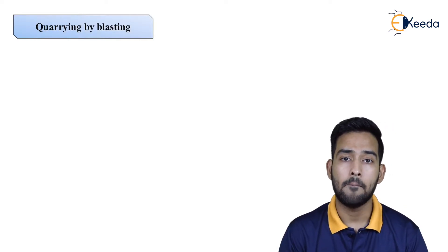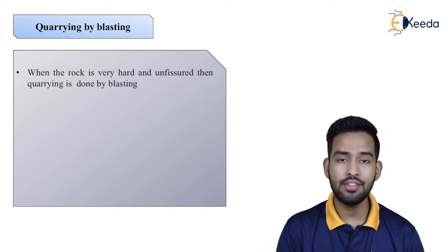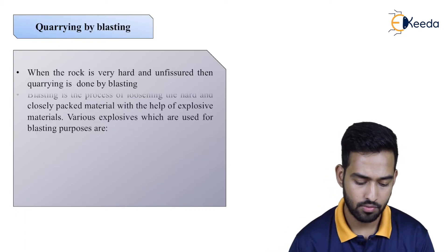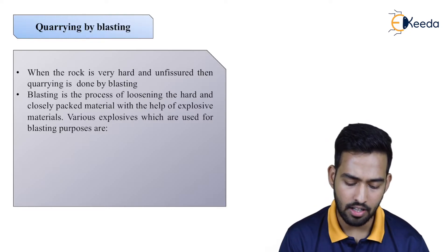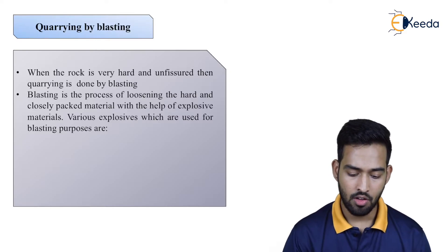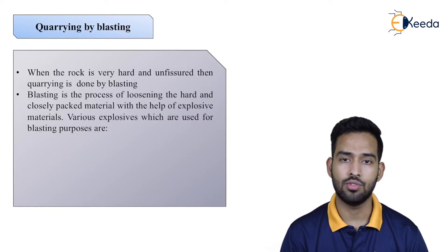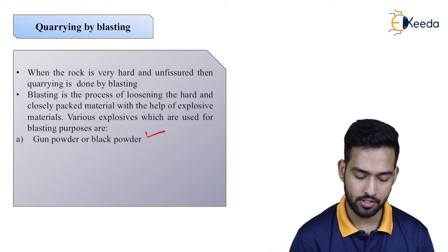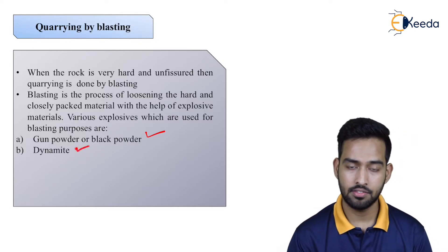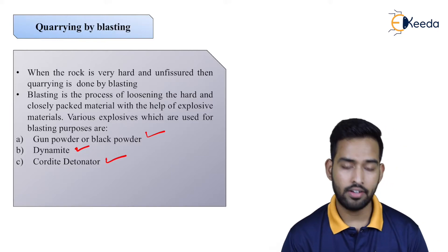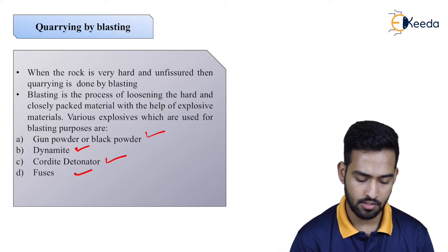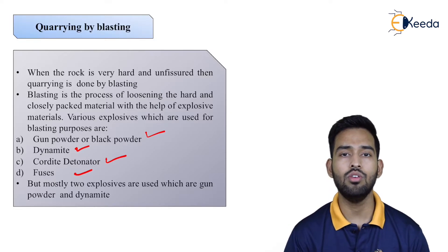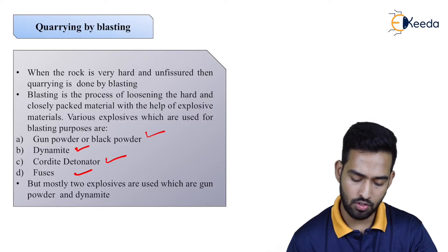Next is quarrying by blasting. When the rock is very hard and unfissured, quarrying is done by blasting. Blasting is the process of loosening hard and closely packed material with explosive materials. Various explosives used for blasting include gunpowder or black powder, dynamite, cordite, detonators, and fuses. Generally, gunpowder and dynamite are most commonly used.